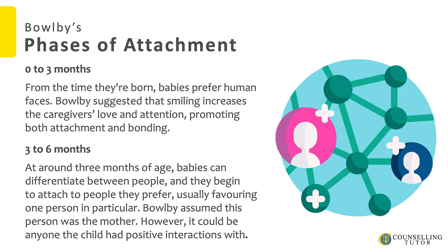Let's look at Bowlby's phases of attachment. From zero to three months, babies prefer human faces. Bowlby suggested that smiling increases the caregiver's love and attention, promoting both attachment and bonding. From three to six months, babies can differentiate between people and begin to attach to people they prefer, usually favouring one person in particular. Bowlby assumed this person was the mother; however, it could be anyone the child had positive interactions with.